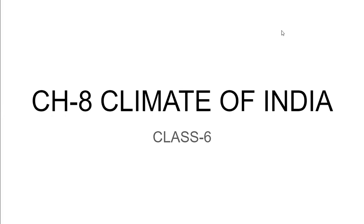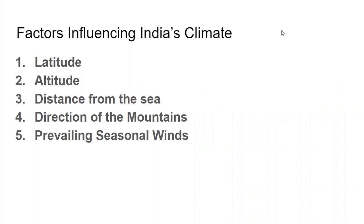A question arises in our mind: what is weather and climate? Weather is the condition of the atmosphere at a particular place and time, such as temperature, rainfall, sunshine, etc. And what is climate? The regular pattern of weather conditions of a particular area is known as climate. We can say climate is the average weather condition of a particular place over a particular time. Weather is about day-to-day change in the atmosphere — it may be hot or cold, sunny or cloudy, or windy and calm.